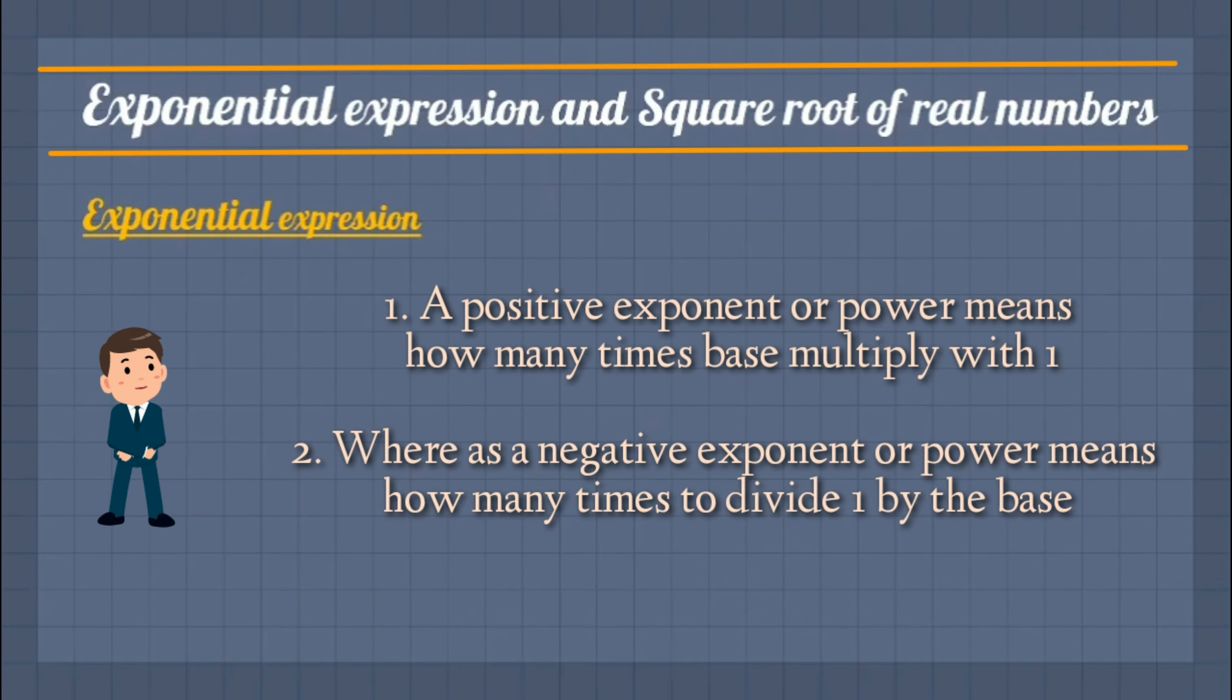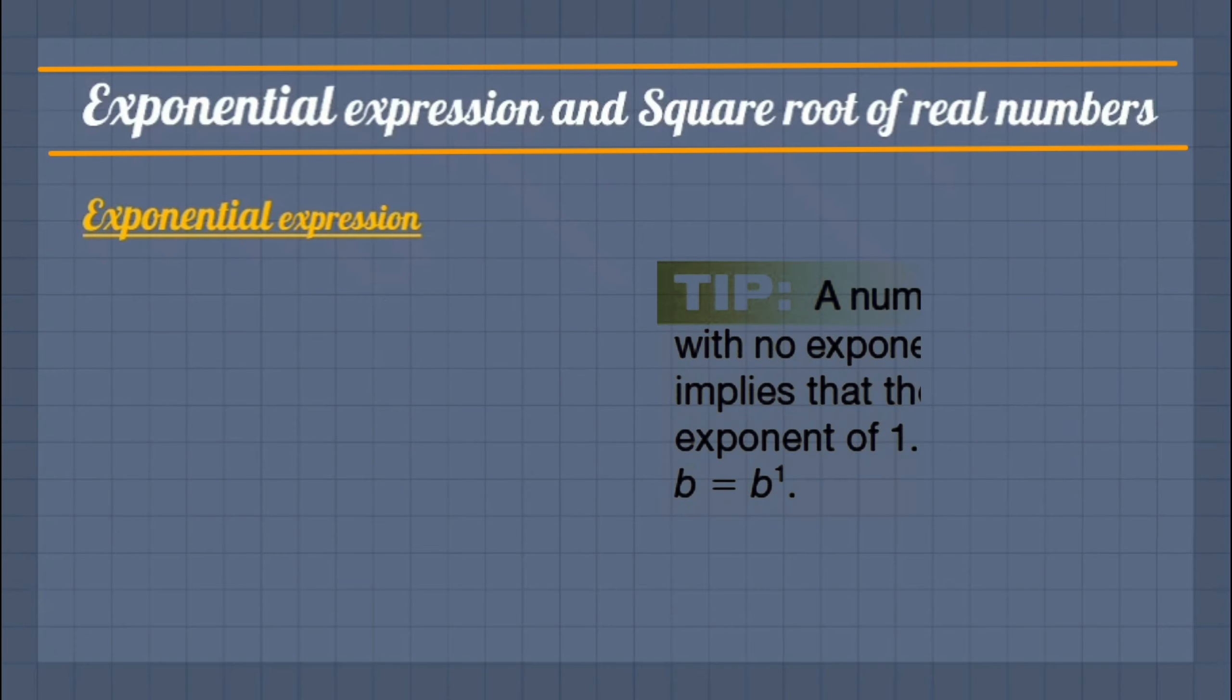A positive power says how many times base multiply with one, whereas a negative power says how many times to divide one by the base. So it is better to understand this with the examples.